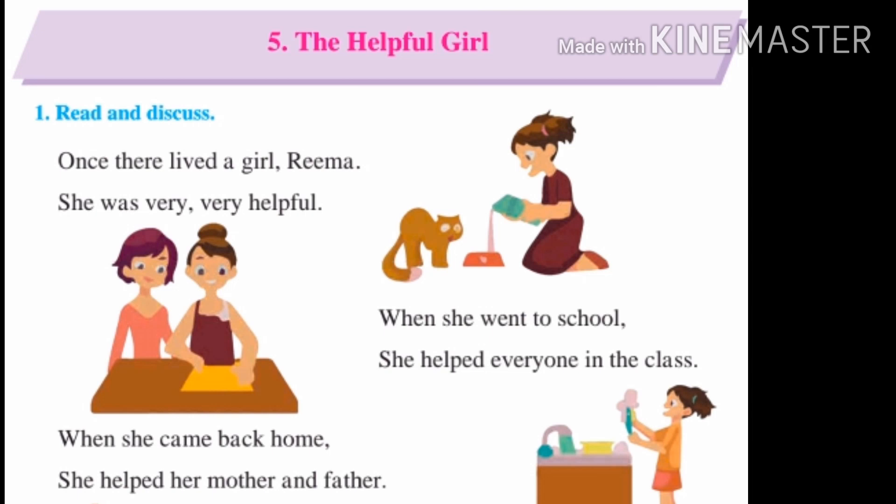Word meanings: Once means ek samay mein, there means wahan pe, live means rehna, very very means bohot, helpful means madadgar.